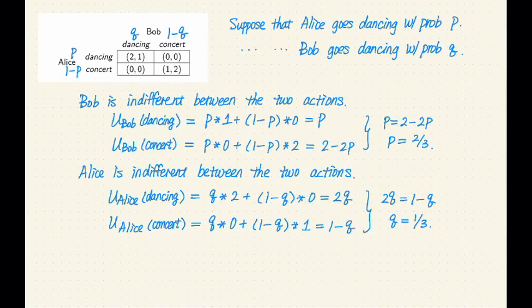We're deriving a mixed strategy Nash equilibrium, which means we have two probability distributions — one over the actions of the row player, Alice, and the other one over the actions of the column player, Bob. Because there are two actions, we need one probability to specify each distribution. Let's assume that Alice goes dancing, choosing the top action with probability P, and Bob chooses the left action with probability Q. I've also labeled the utility matrix with these probabilities for our calculations.